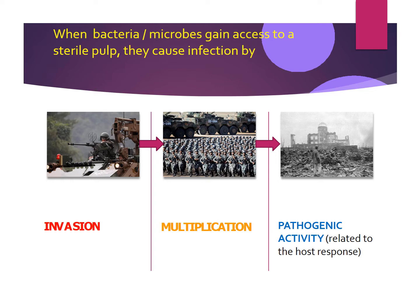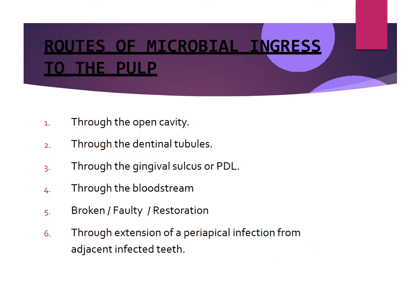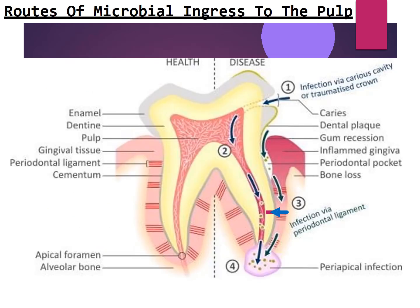Let's look at the pathogenicity of bacteria in causing periapical infection. Microbes or bacteria cause periapical infection by three steps: the first step is invasion, the second is multiplication, and the third is pathogenicity. Coming to invasion, the bacteria gain access to the pulp through various routes — the first being the open cavity, second the dentinal tubules, then by the gingival sulcus or periodontal ligament or through the bloodstream, through broken, faulty or defective restoration, or through extension of periapical infection from adjacent infected teeth.